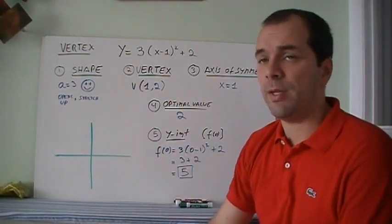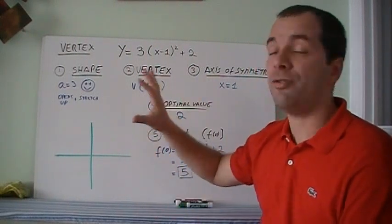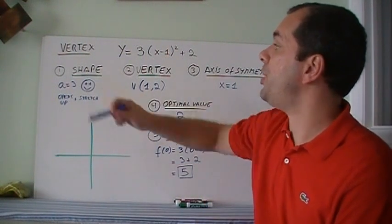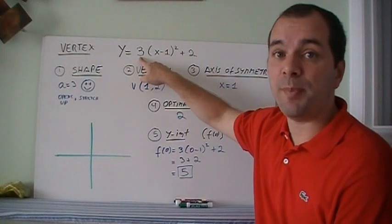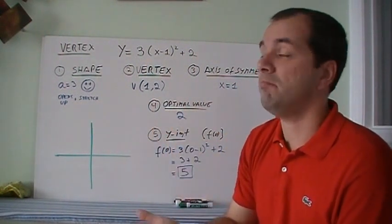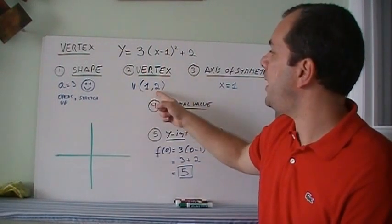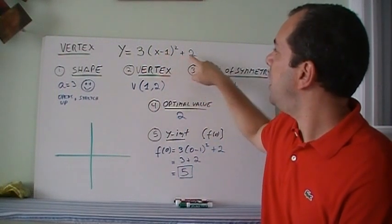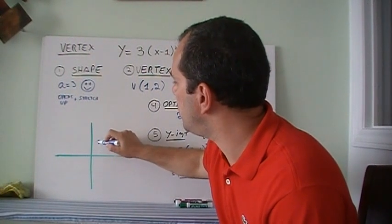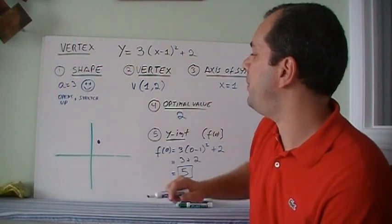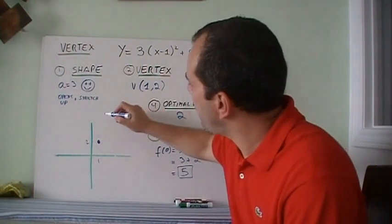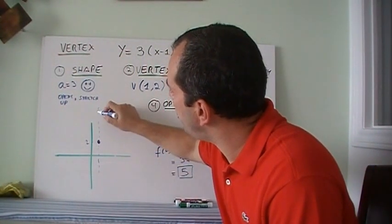Now let's look at vertex form: y = 3(x − 1)² + 2. The 'a' is 3, positive, so it opens up — it's a smile. Since 3 is greater than 1, it's also a stretch. The vertex is at (1, 2): the value 1 makes the bracket go to zero, and 2 is the constant at the end. Since it opens up the parabola goes upward from there. The axis of symmetry goes right through the vertex, so x = 1.